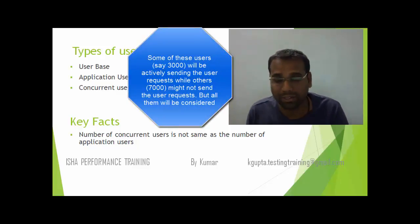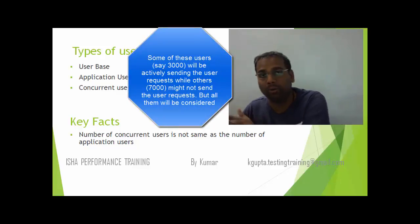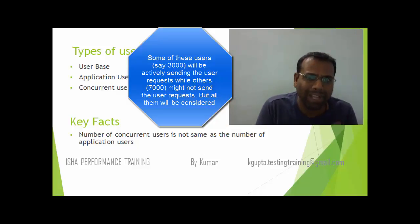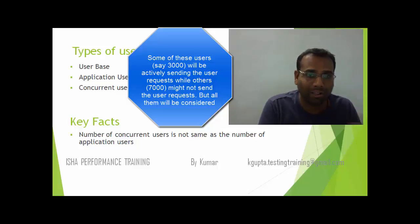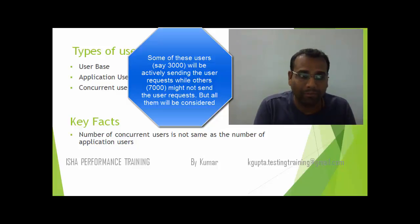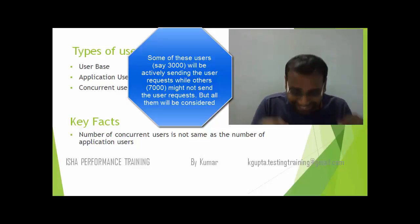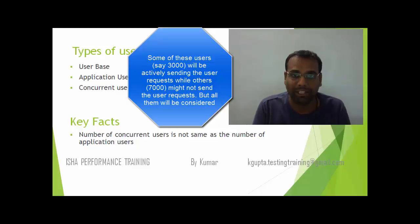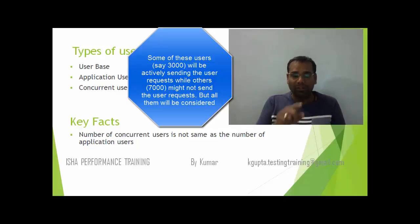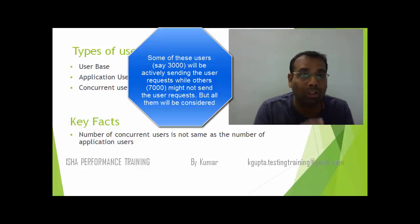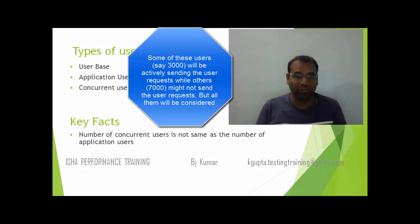Some of them have logged in but are browsing Facebook or doing something else. Some of them might be sending requests — out of the 10,000, let's say 2,000 or 3,000 are actively sending requests, which means they are actively using Gmail and doing something on that application. That's what online users or application users are: those who have logged in but not logged out yet.